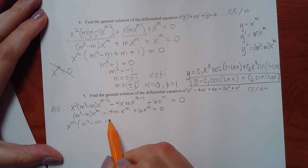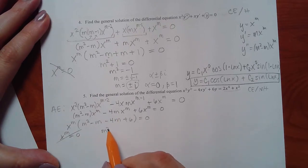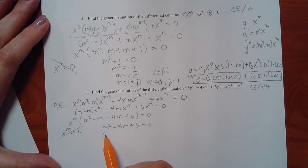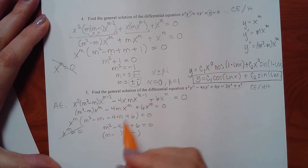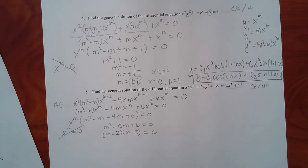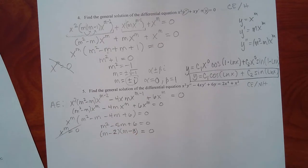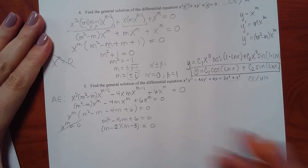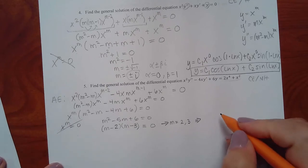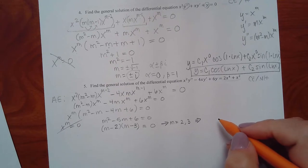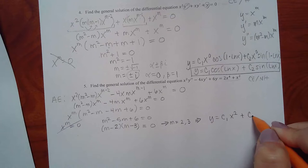Setting the bracket equal to zero: m squared minus 5m plus 6 equals zero. Careful with the 5-6 combination — make sure the factors multiply to give positive 6 and add to give negative 5. That gives m equals 2 and m equals 3, both distinct real roots. Using the Cauchy-Euler case 1 formula: yc equals c1·x squared plus c2·x cubed. This is only yc since the problem is non-homogeneous.